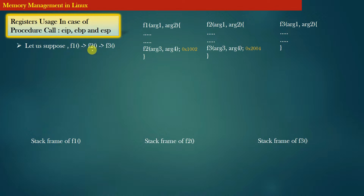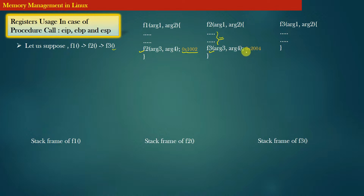In our example we have three functions: function f1 invokes function f2, and function f2 invokes function f3. The address of the instruction in f1 which invokes f2 is 1002 (hexadecimal). Similarly, inside f2 there are certain computations and eventually f2 invokes f3 using the instruction at address 2004. Finally, function f3 does not invoke any other function — it just performs its local computation and returns.